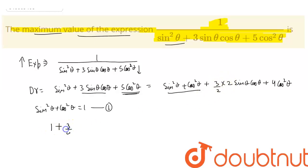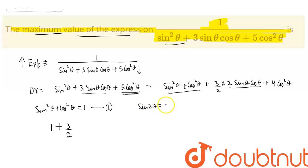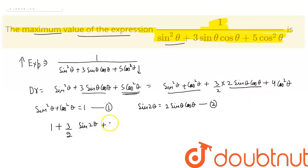We now write the value of 2sinθcosθ using the double angle identity: sin2θ = 2sinθcosθ. So the 3sinθcosθ term becomes (3/2)sin2θ. After substitution, the denominator becomes 1 + (3/2)sin2θ + 4cos²θ.